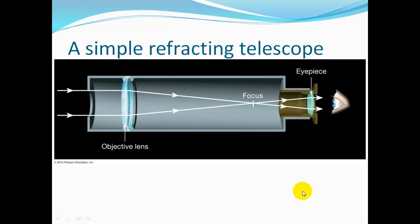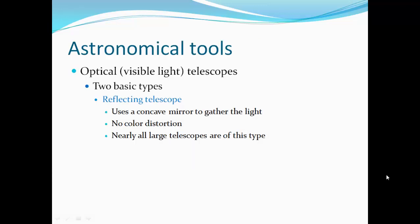Here's our refracting telescope. We have our objective lens, and it focuses the object at this point, which is upside down. So we have this eyepiece lens that then flips the image back right side up.